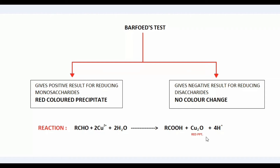The Barfoed's reagent will be linked in the description box below, so please check out for that. Now, let's assume that our sample is a disaccharide. Barfoed's test doesn't give a positive result for reducing disaccharides, so our sample doesn't give any color at all.